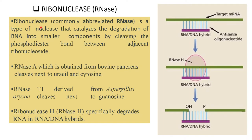Ribonucleases, commonly abbreviated as RNase, are a type of nuclease that catalyze the degradation of RNA into small components by cleaving the phosphodiester bond between adjacent ribonucleosides. RNase A, obtained from bovine pancreas, cleaves next to uracil and cytosine, whereas RNase T1, derived from Aspergillus oryzae, cleaves next to guanosine.